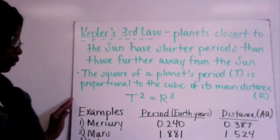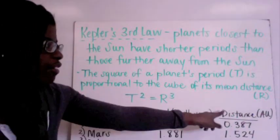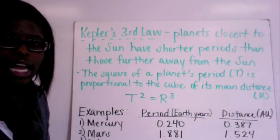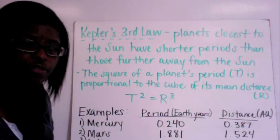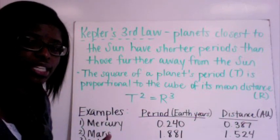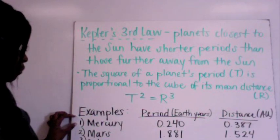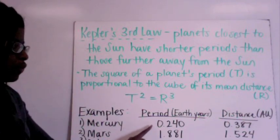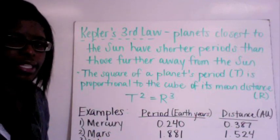So I have some examples for you. We have three different planets. We have their period which is measured in Earth years. And we have their distances which are measured in astronomical units which is the average distance of Earth to the Sun. So then we're going to have Mercury has a period of 0.240 which has a distance of 0.387 from the Sun.